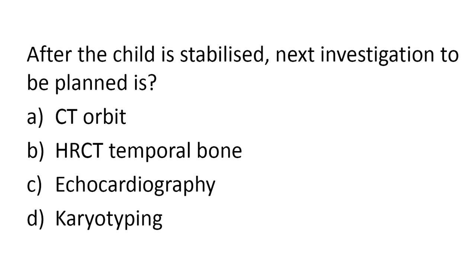The question is: after the child is stabilized, what is the next investigation you are planning to do? The options are CT orbit, HRCT temporal bone, echocardiography, or karyotyping. Karyotyping can be easily ruled out because milestones are normal and there are no dysmorphic features, so it is probably not a chromosomal or genetic disorder. The remaining options are CT orbit, HRCT temporal bone, and echocardiography.